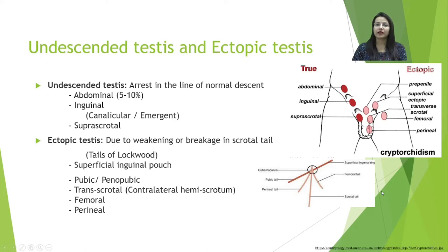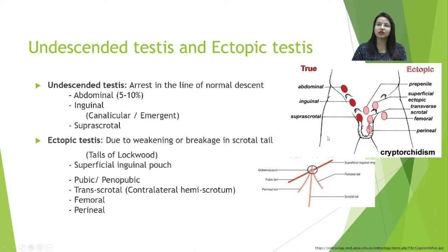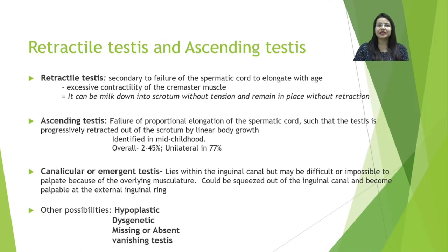Ectopic testis has been hypothesized by Lockwood. The gubernaculum has various tails — the predominant one being the scrotal tail, followed by pubic, perineal, femoral, and superficial inguinal ring tails. If the predominant scrotal tail weakens or breaks, the testis can migrate to ectopic sites. The most common ectopic site is the superficial inguinal pouch, followed by the pubic or penopubic area, trans-scrotal (contralateral scrotal sac), femoral, and perineal locations.